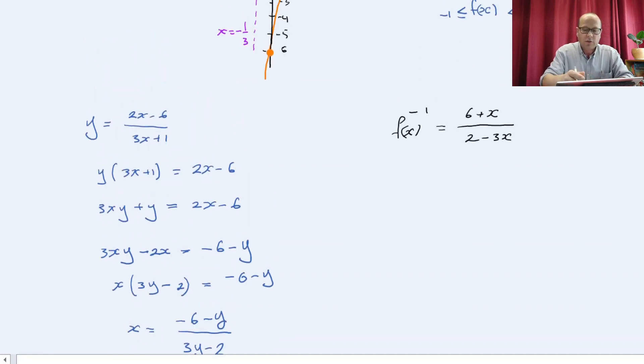And of course, the range of it will be 2 over 3 as before, because the domain of the function is the range of the inverse and vice versa. Thank you.